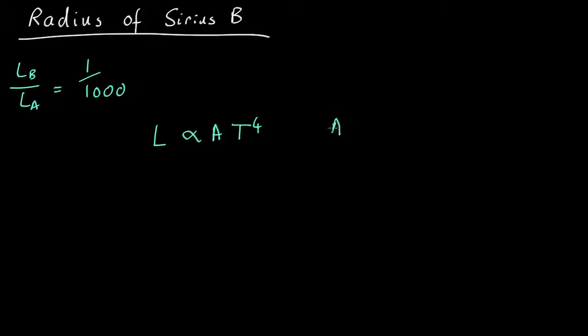But the area, the surface area of something, is just proportional to its radius squared. It's 4πr², the surface area of a sphere. So know that luminosity is proportional to r²T⁴.